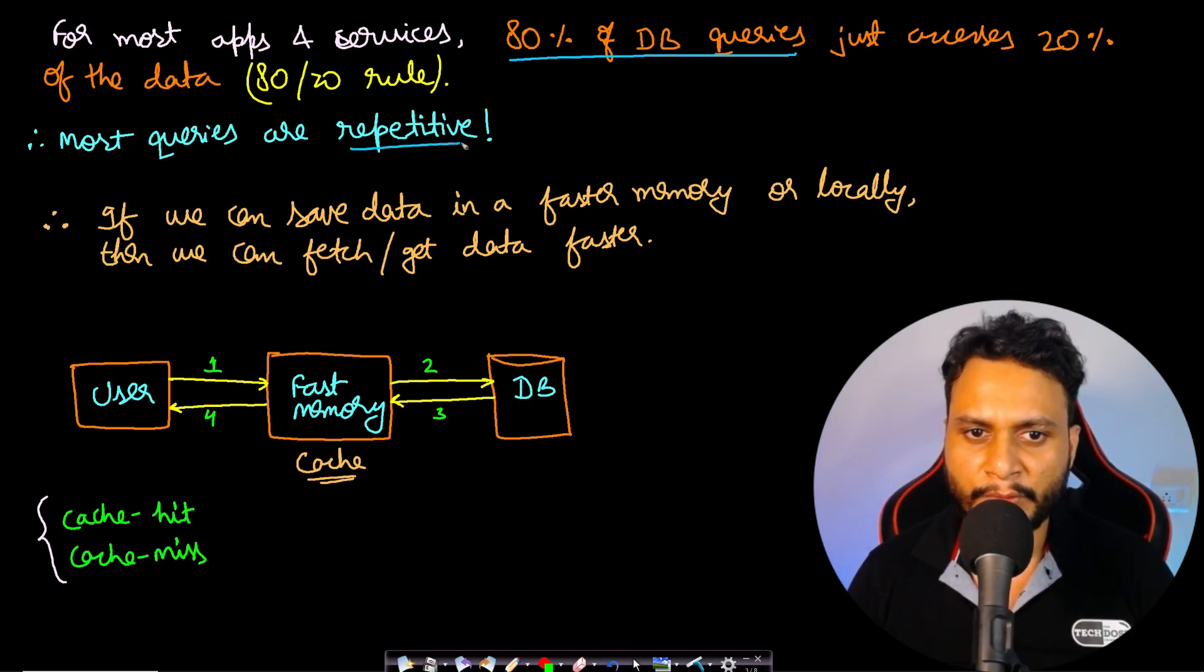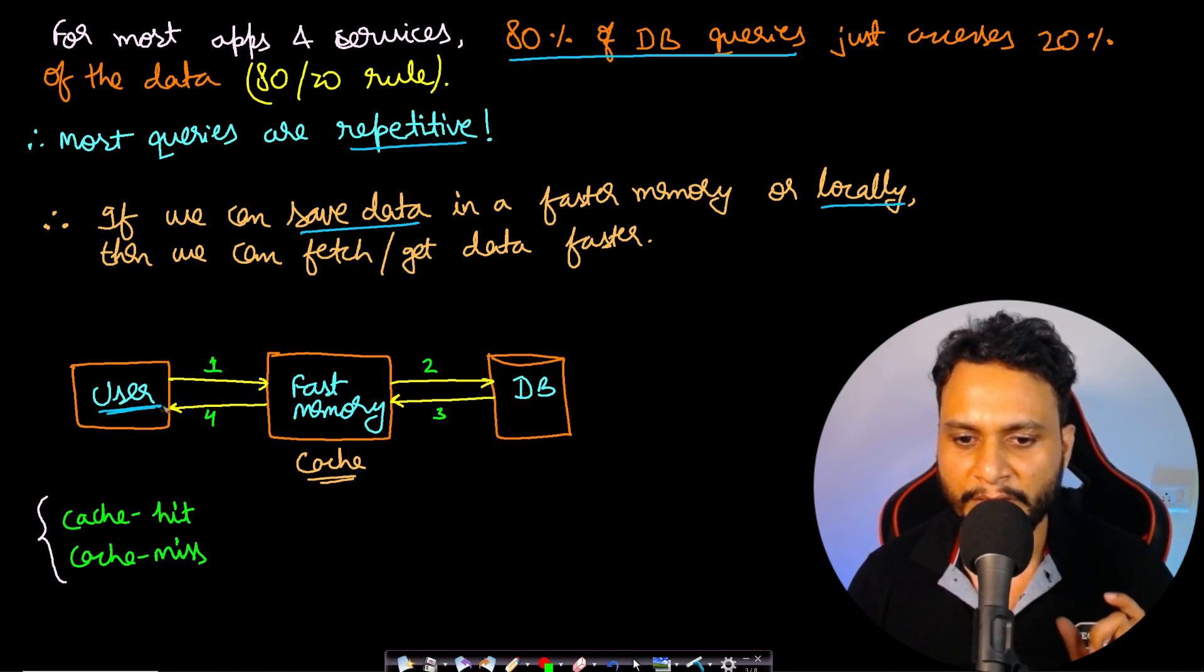Most of the queries are repetitive. Therefore, if we can save the data in a faster memory or even locally, then we can get the data faster. Let's say that we have inserted a fast memory in between the user and the database, in such a way that the user query will not directly go to the database, but the user will make a request and the request will be sent to the fast memory.